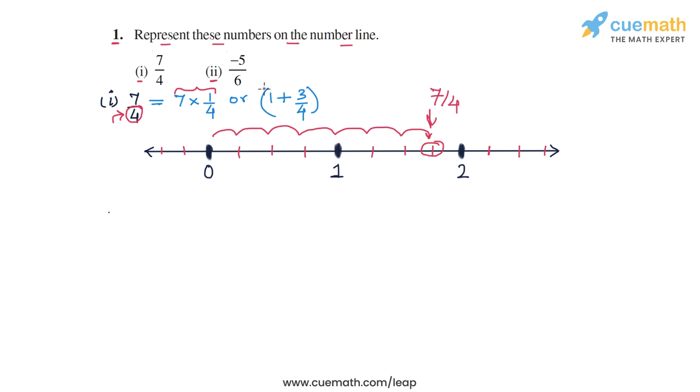The other way to do it is to interpret 7 by 4 as 1 plus 3 by 4. So we know that 1 plus 3 by 4 will lie between 1 and 2, and it will be 1 plus 3 jumps of 1 by 4. So starting from 1, you make 3 jumps of 1 by 4, and you reach the same point. So this point here represents number 7 by 4. So that's part 1.